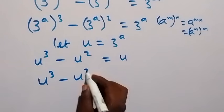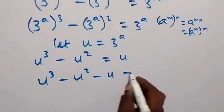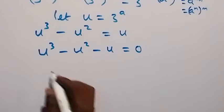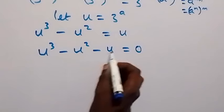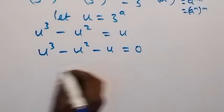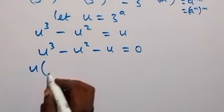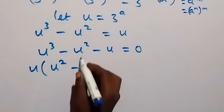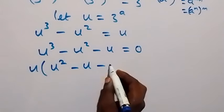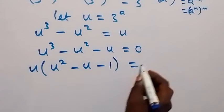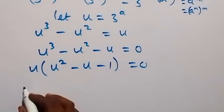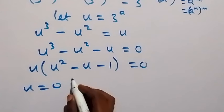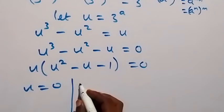Let's bring everything to one side to form a cubic equation. We have u cubed minus u squared minus u equals to zero. From here we can factor u, since u is common. Factoring u out, we have u times the bracket u squared minus u minus 1, equals to zero.